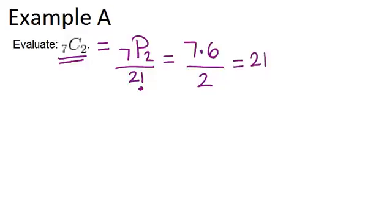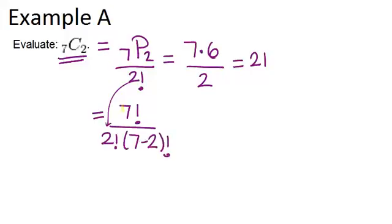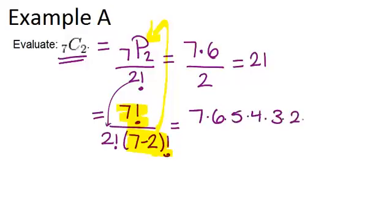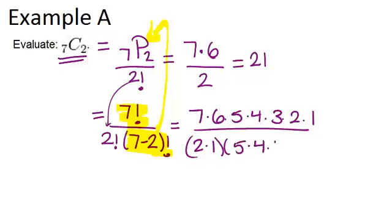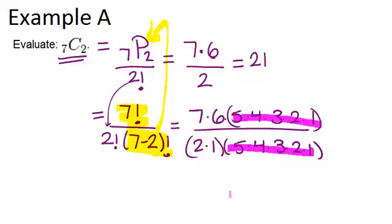Now keep in mind another way you might think about this: instead of using 7P2, you could do 7 factorial over 2 factorial times 7 minus 2 factorial. Remember, 7 factorial divided by 7 minus 2 factorial is the same thing as 7P2, which works out to be 7 times 6. If you expand it out, the 5 factorial cancels on the top and bottom, and you're left with 7 times 6 divided by 2, which is 21. Either way you get the same answer — it just depends on how you prefer to think about it.